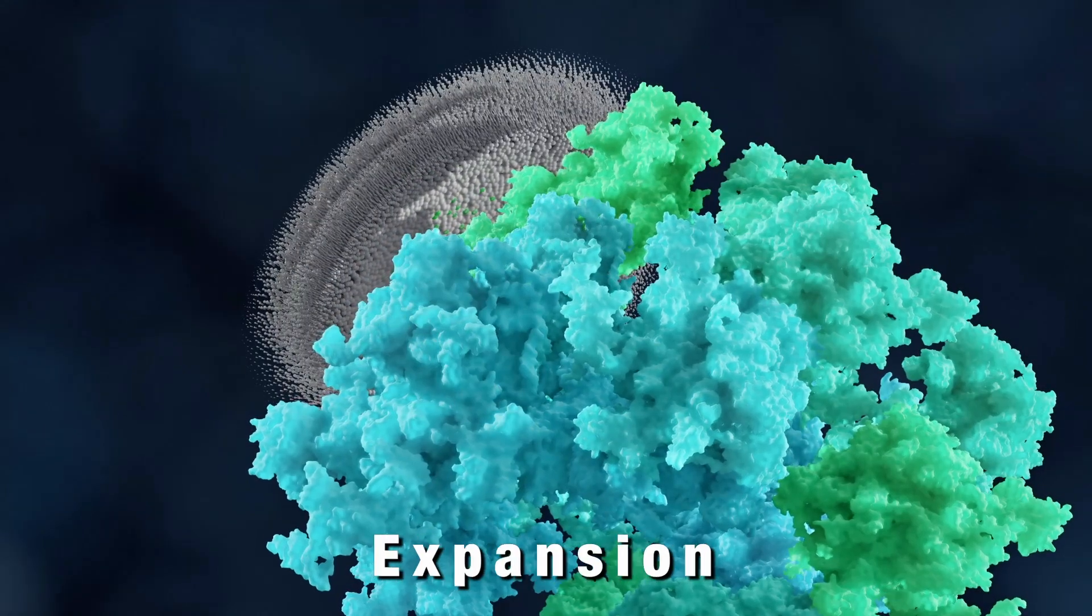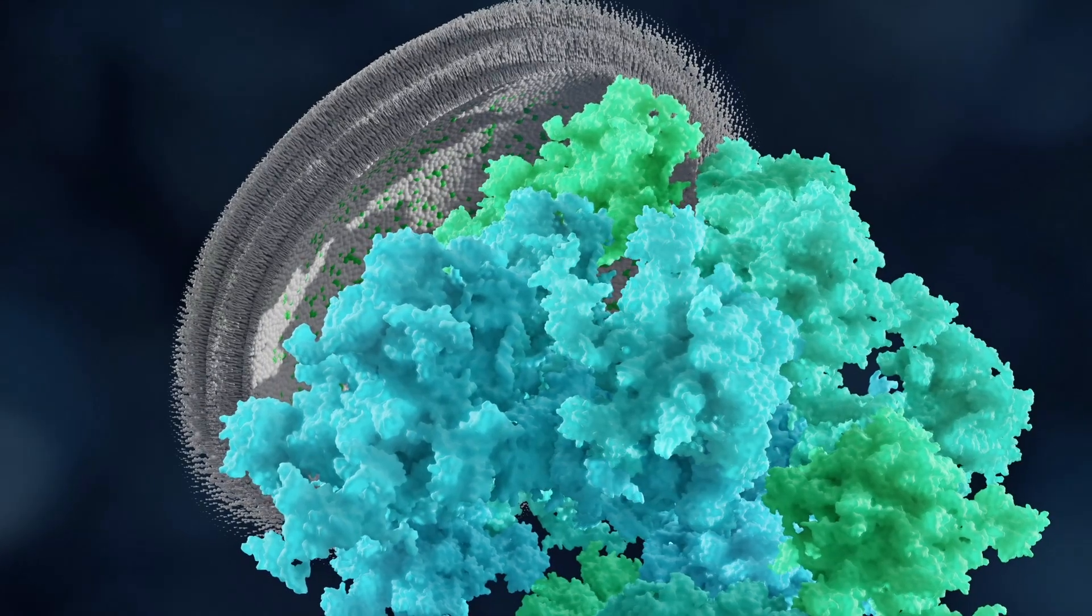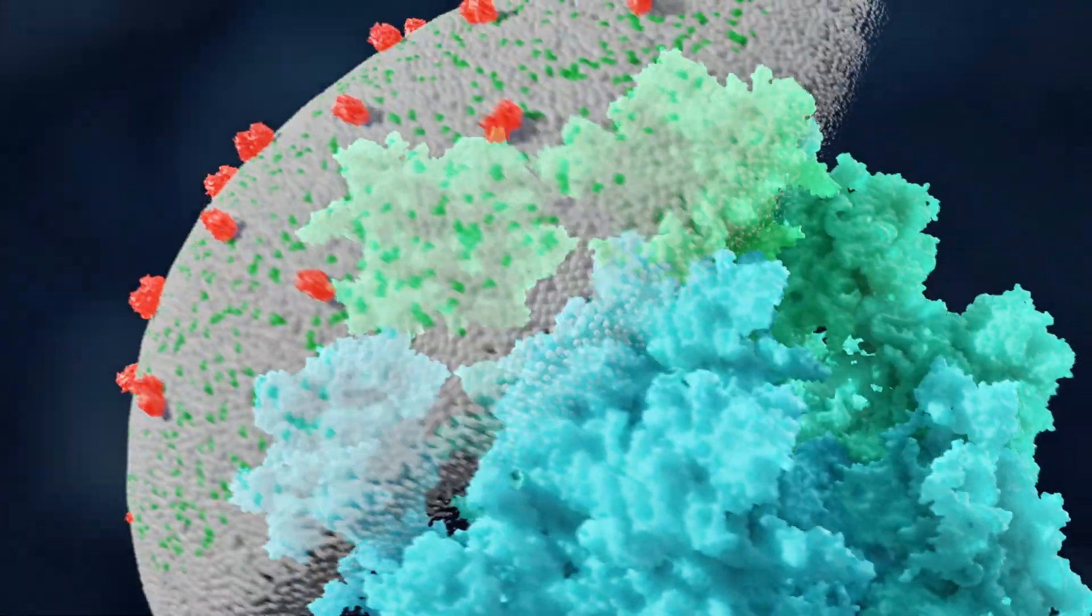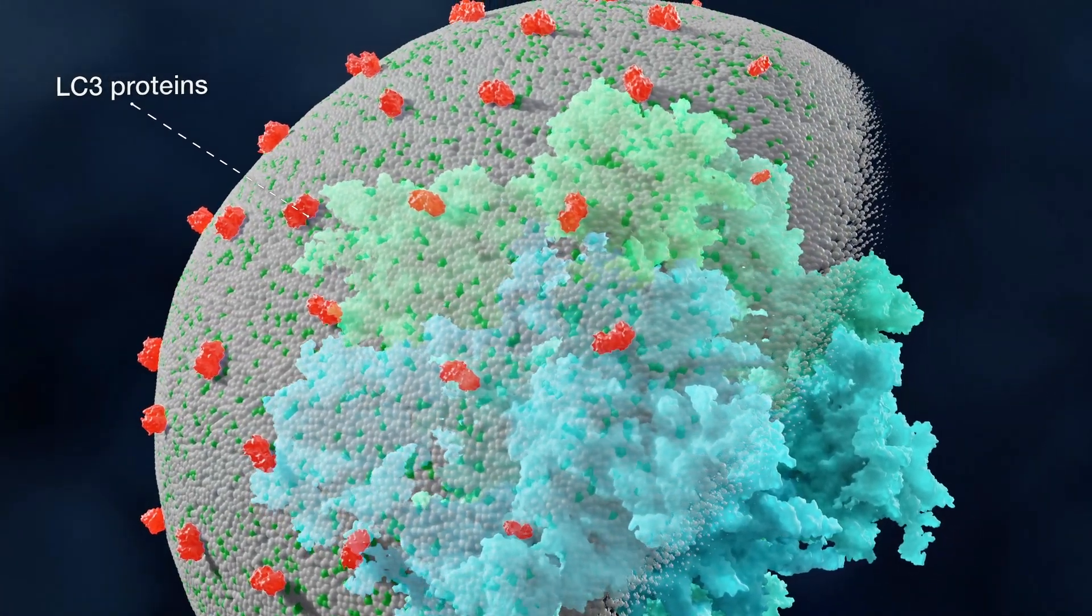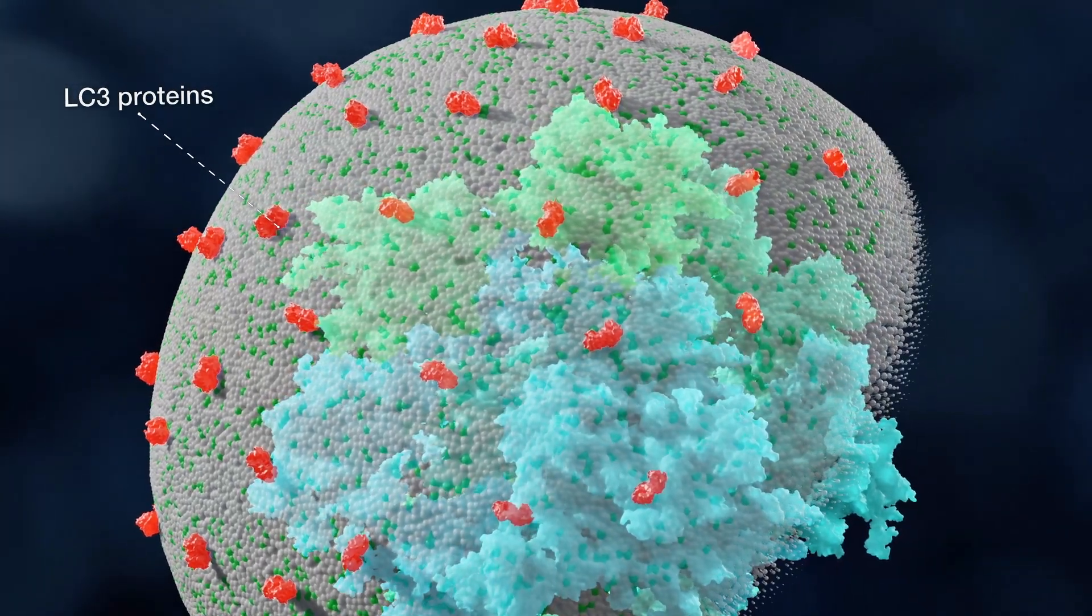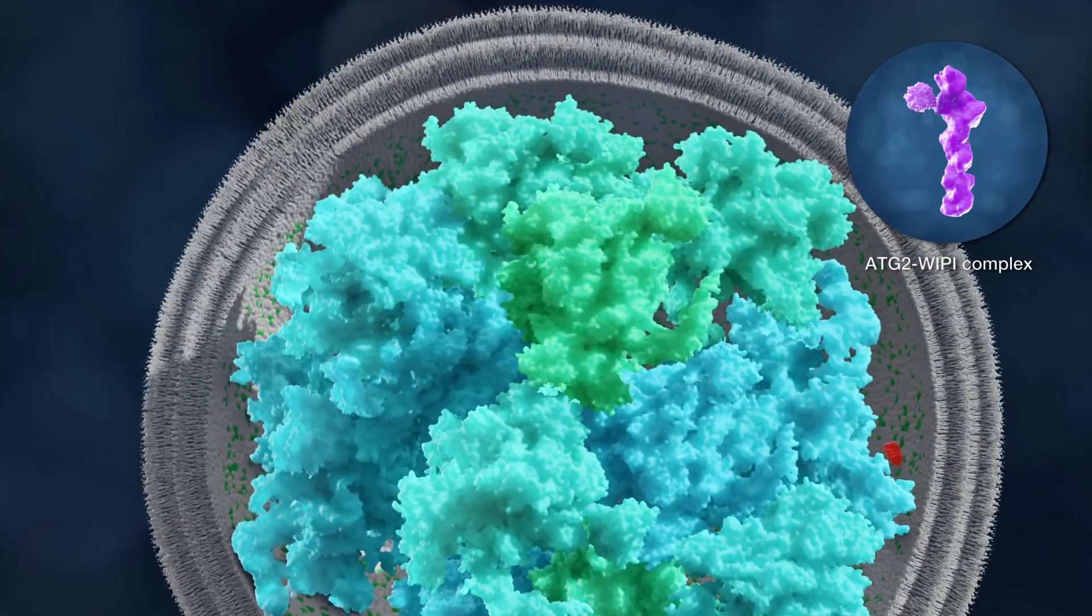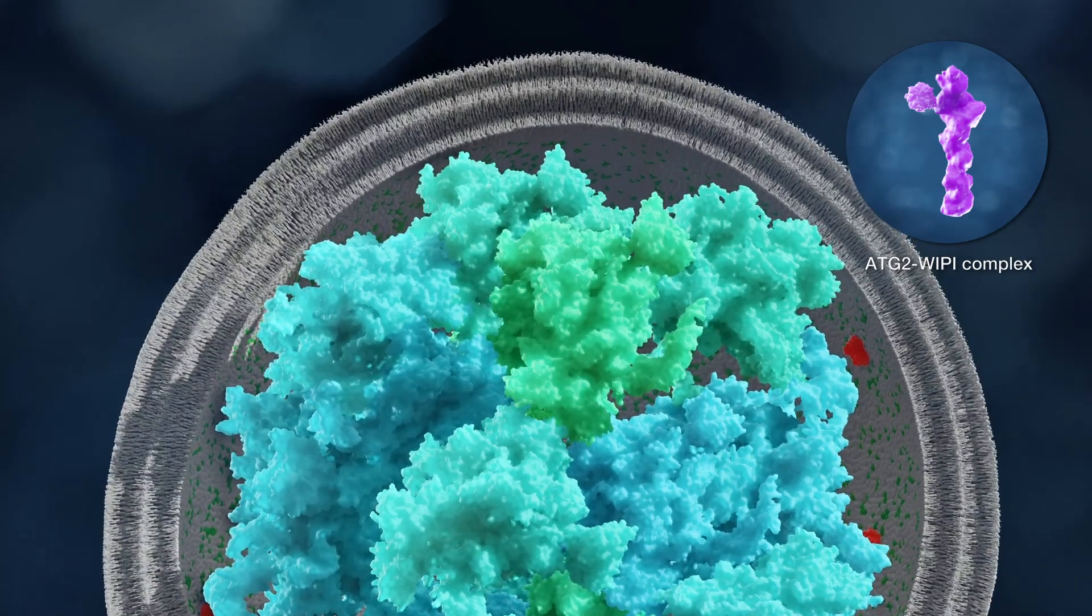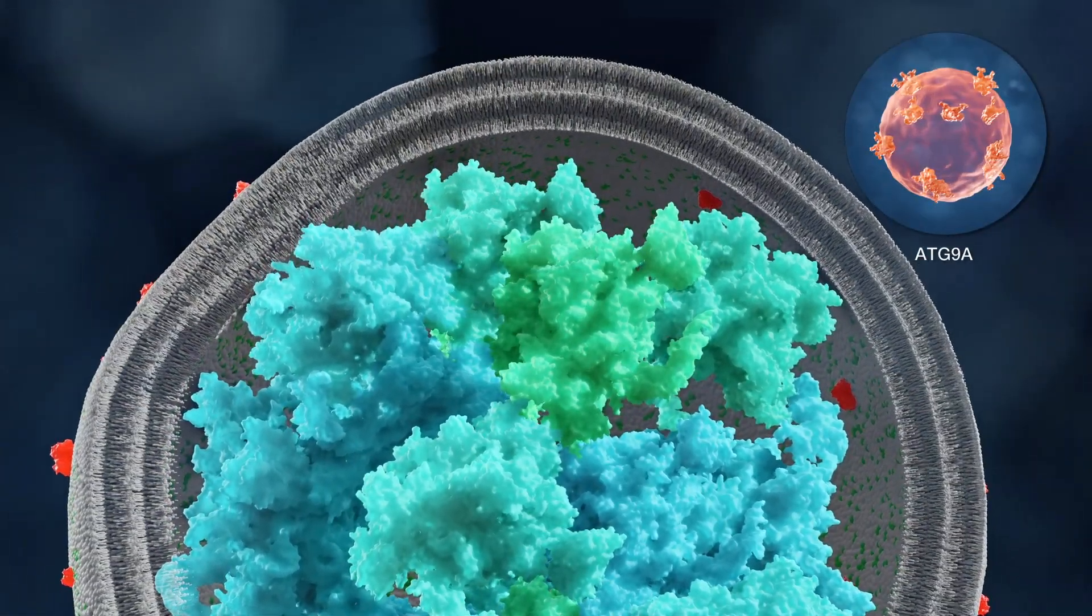The expansion step relies on the association to the phagophore of the ATG machinery components, such as the ATG2-VP complex and the ATG12 and LC3 conjugation systems that eventually conjugate the members of the ubiquitin-like LC3 protein family through the phosphatidyl ethanolamine present in the membrane of the growing phagophore. ATG2 proteins are key in supplying part of the lipids required for the phagophore expansion through their direct transfer from the endoplasmic reticulum in conjunction with the ATG9A lipid scramblase activity.